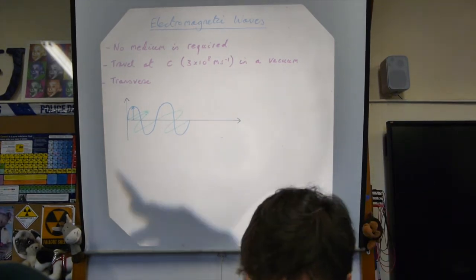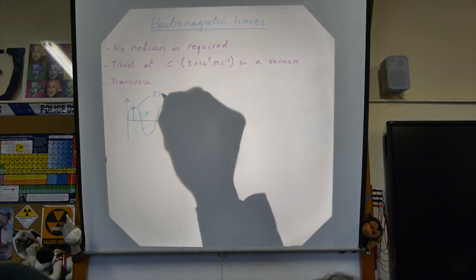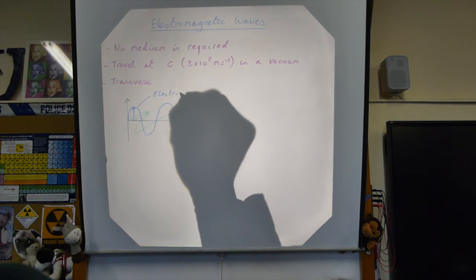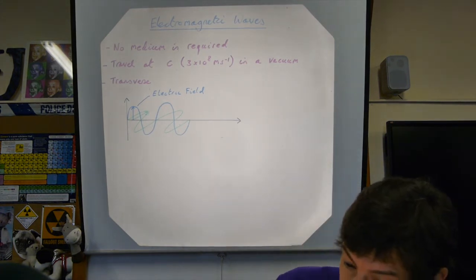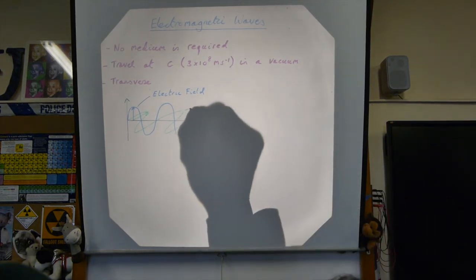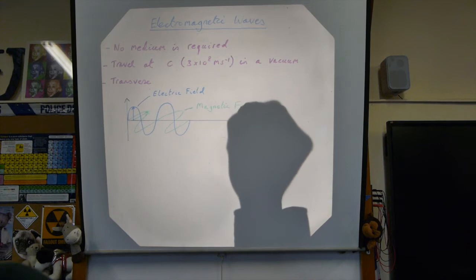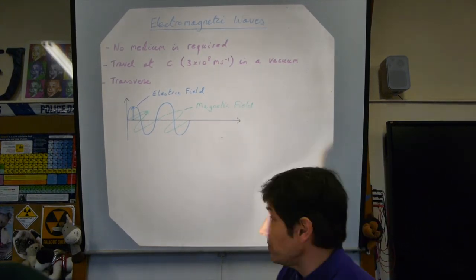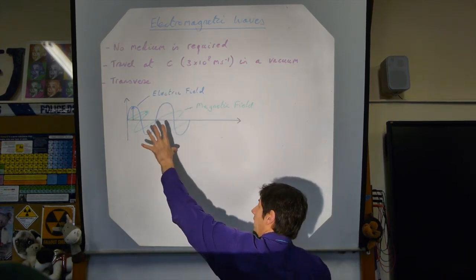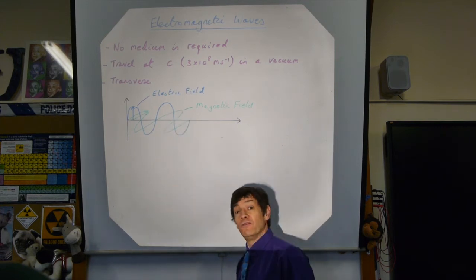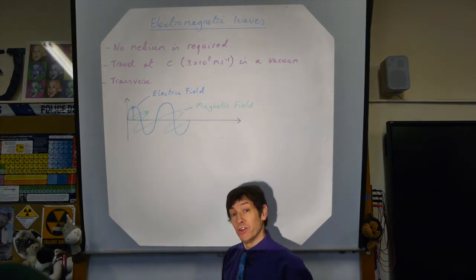I'll just quickly annotate my diagram. That's the varying electric field — we do quite a bit on electric fields in the second year A-level course. And this, for example, is the magnetic field that's oscillating. So after all of that, the important bit is that an electromagnetic wave consists of oscillating fields in space, and there's a transverse nature to both of those fields.